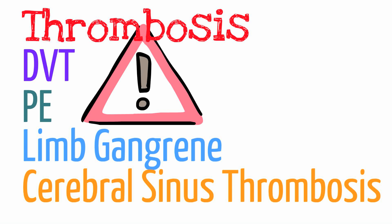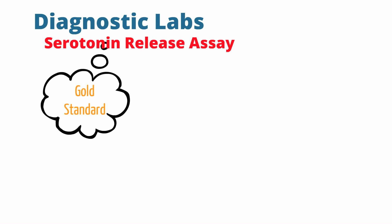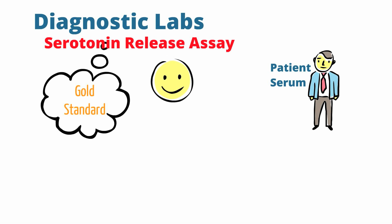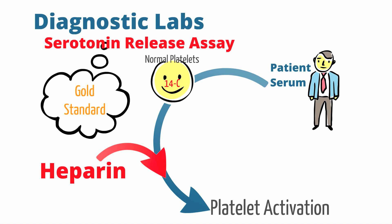The serotonin release assay is the gold standard for diagnosis of HIT type 2. You take the patient's serum and mix it with platelets that have a radiolabeled 14-carbon serotonin. When these platelets are activated, they release the serotonin with the 14-carbon radiolabel. The radiolabeled platelets are mixed with the patient's serum and exposed to heparin. If the patient has HIT, heparin activates the platelets and releases the 14-carbon serotonin, yielding a positive assay.